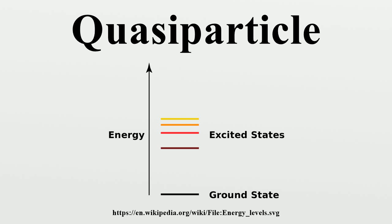Other quasi-particles or collective excitations include phonons, plasmons, and many others. These particles are typically called quasi-particles if they are related to fermions, and called collective excitations if they are related to bosons, although the precise distinction is not universally agreed upon. The quasi-particle concept is most important in condensed matter physics, since it is one of the few known ways of simplifying the quantum mechanical many-body problem.